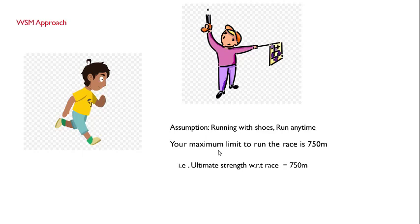The same thing applies to concrete. In the working stress method, you make an assumption that the material is linear elastic — that is an assumption. You also get the ultimate strength of the concrete: for M25 grade concrete, the ultimate strength is 25 N/mm². Similarly, with the assumption that you run with shoes at any time, some trials revealed that you can run a maximum of 750 meters.